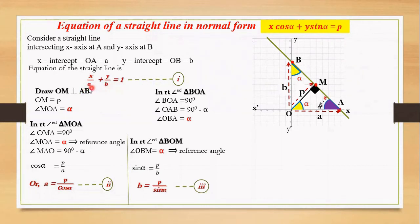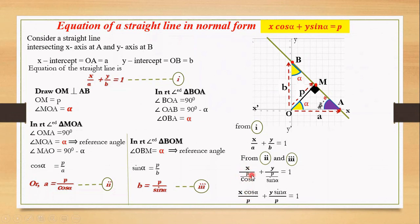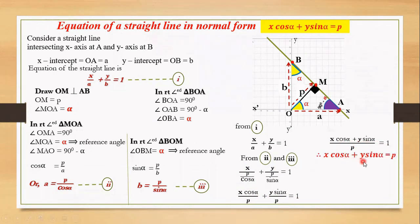Now in equation number one, let's substitute for A and B from equations two and three. Equation one is x by A plus y by B equals to 1. Substituting, A is replaced by P by cos alpha and B is replaced by P by sin alpha. Simplifying, cos alpha goes to the numerator to multiply with x, and sin alpha multiplies with y. Taking LCM as P, we get x cos alpha plus y sin alpha equals to P, which is the required equation of the straight line in normal form.